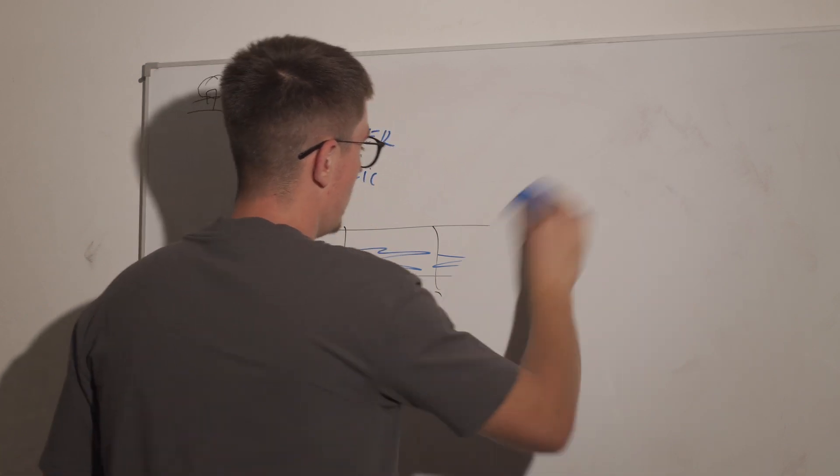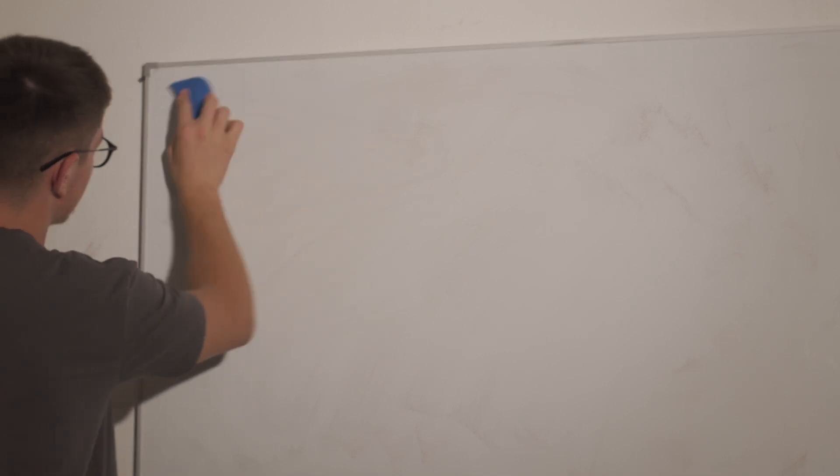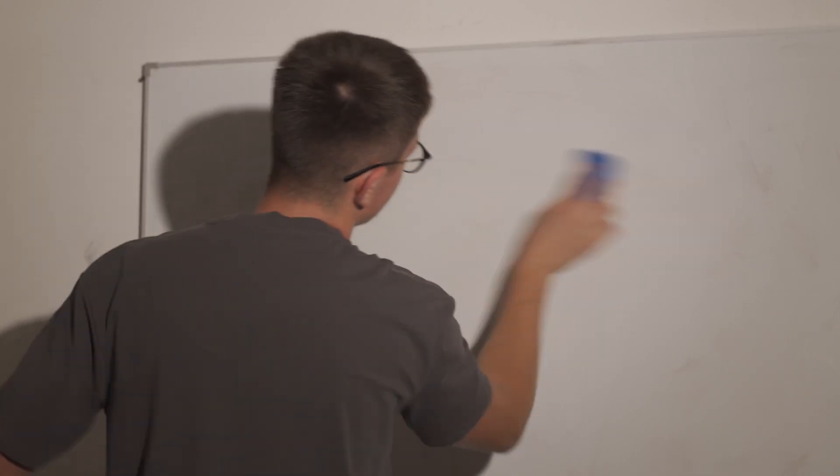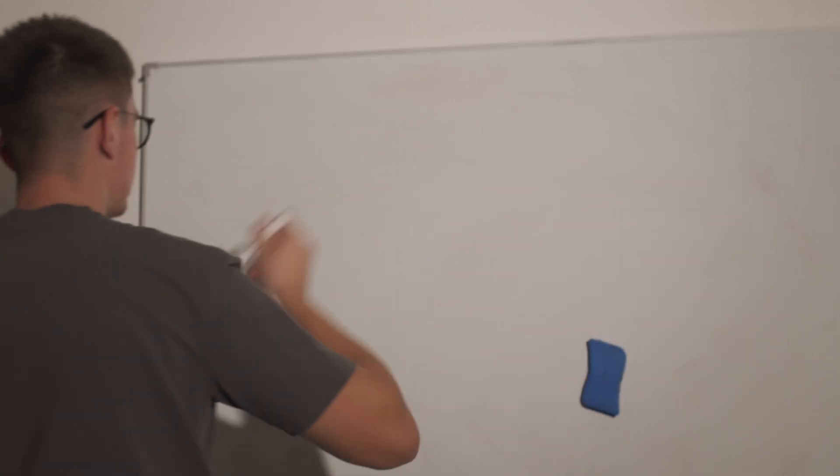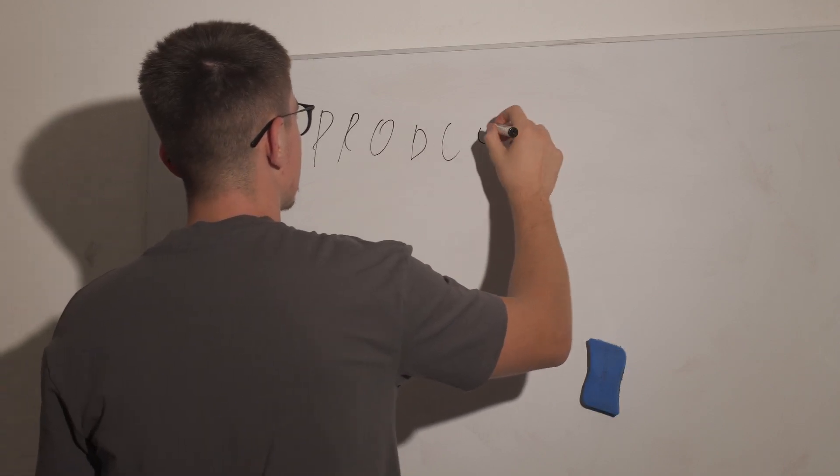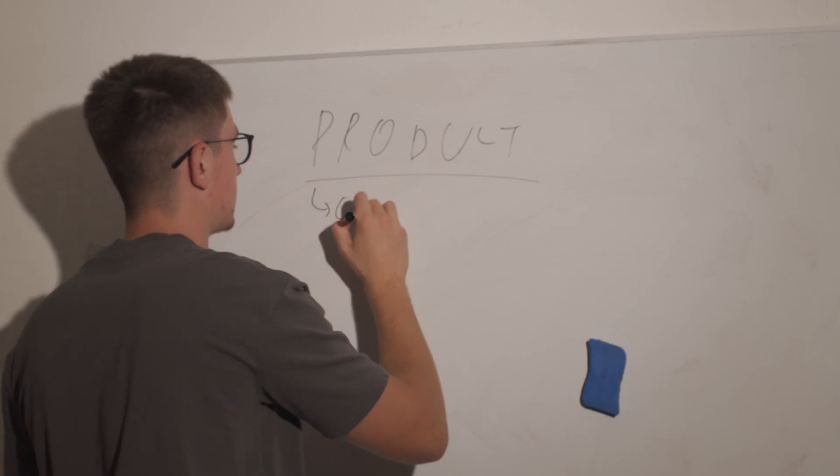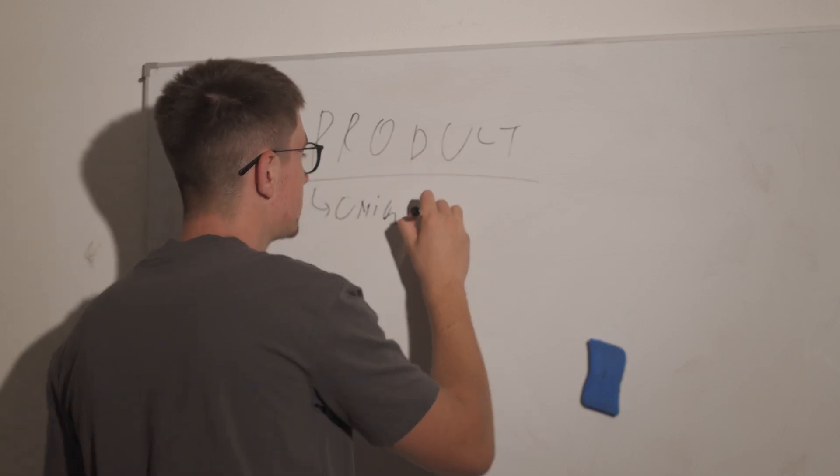So you have to make sure that this is really good. This was the funnel. And now here comes the product part which is really important for you because you have to make sure you have a good product. What do you need to know about products?